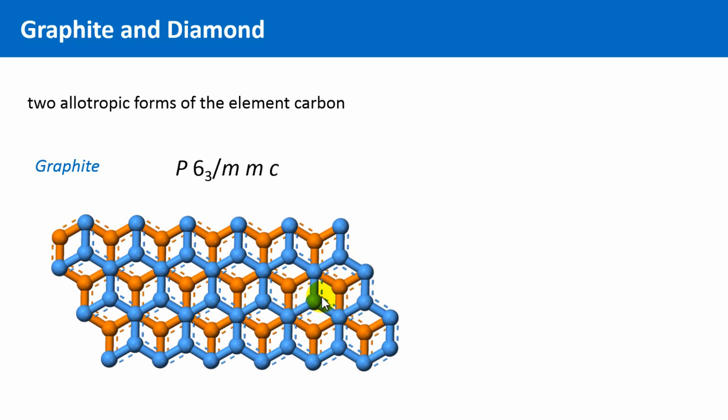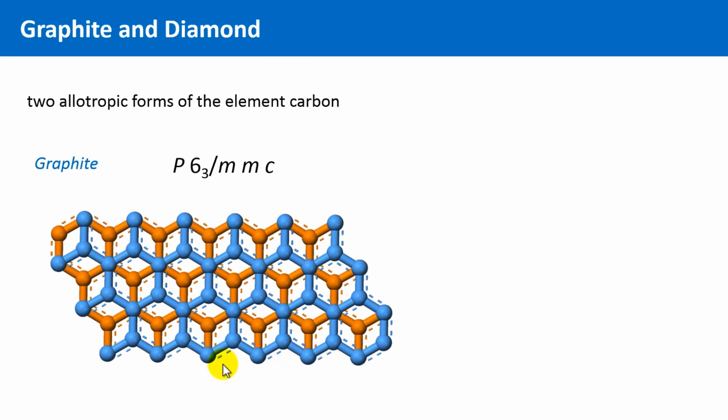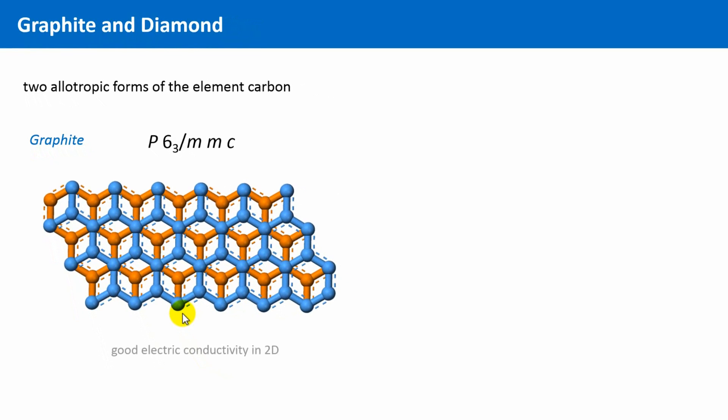These dashed lines mark so-called delocalized electrons. And we see that these lines appear along the whole plane. This is the reason why graphite is a relatively good electrical conductor, but only along this plane.